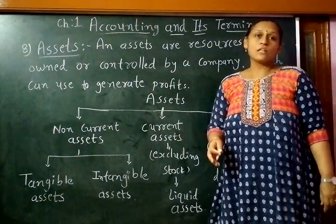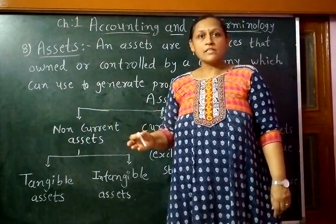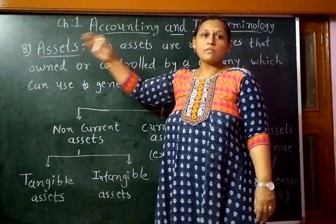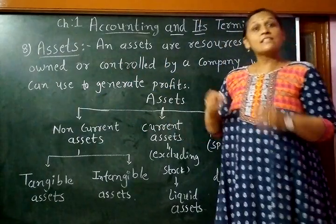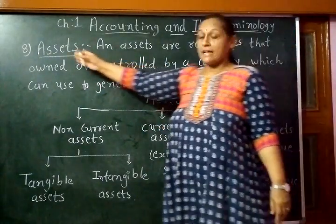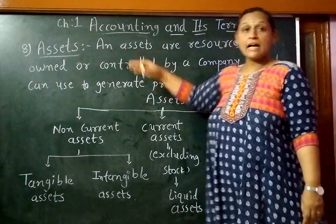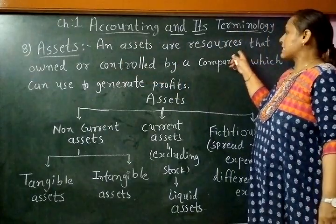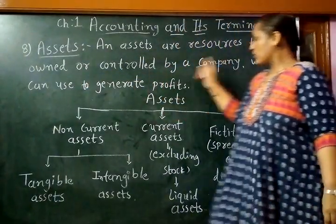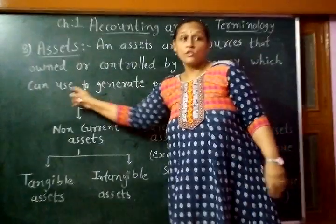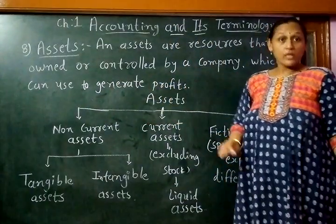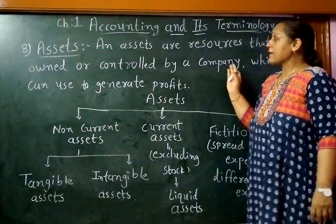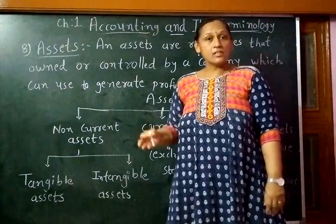We already know the liability. As we know, there is a liability in the business, and because of that liability we can get the asset. So liability and asset both are the two sides of the balance. Asset means something that is helpful in the business. The definition of asset is: assets are resources that are owned and controlled by a company which can be used to generate profit.